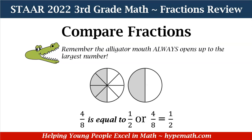Now, let's look to the right-hand side or the right circle. We have 2 total parts. 2 is my denominator and we have 1 shaded part. And as we compare the two circles, we can see that they are equal to each other. And that is why 4 eighths is equal to 1 half.